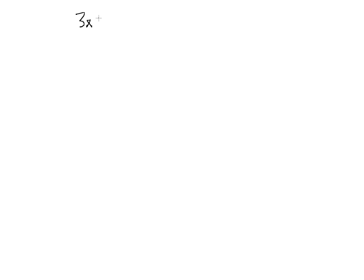Let's solve the following linear system using elimination. We have 3x plus 5y equals 10, and we also have x minus 2y equals 8.